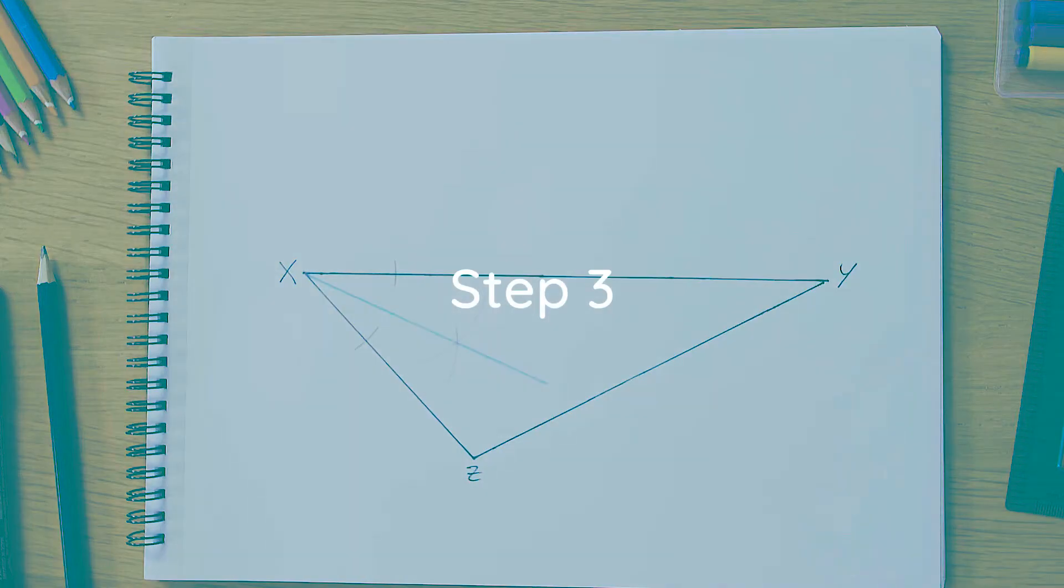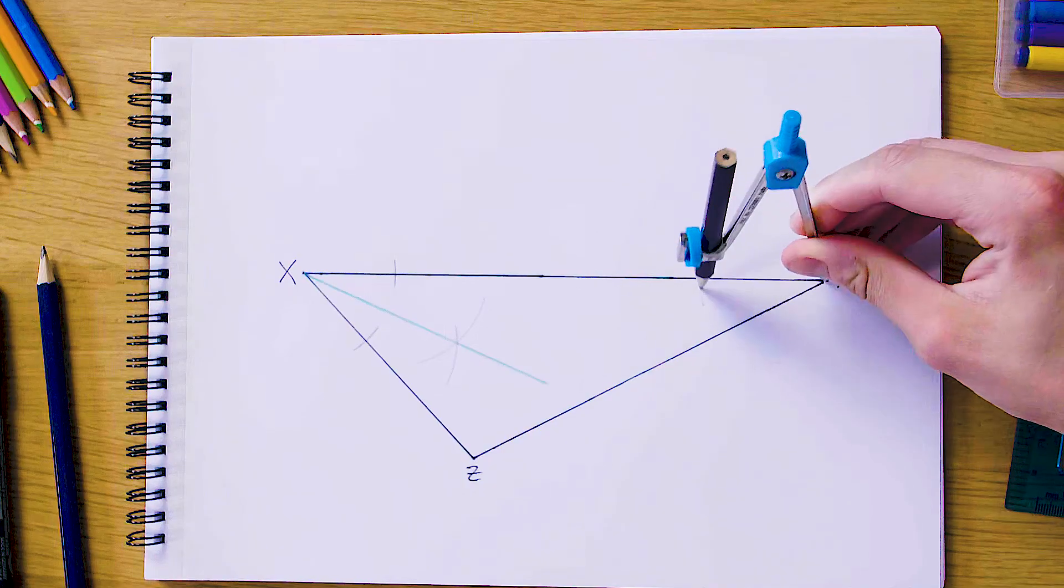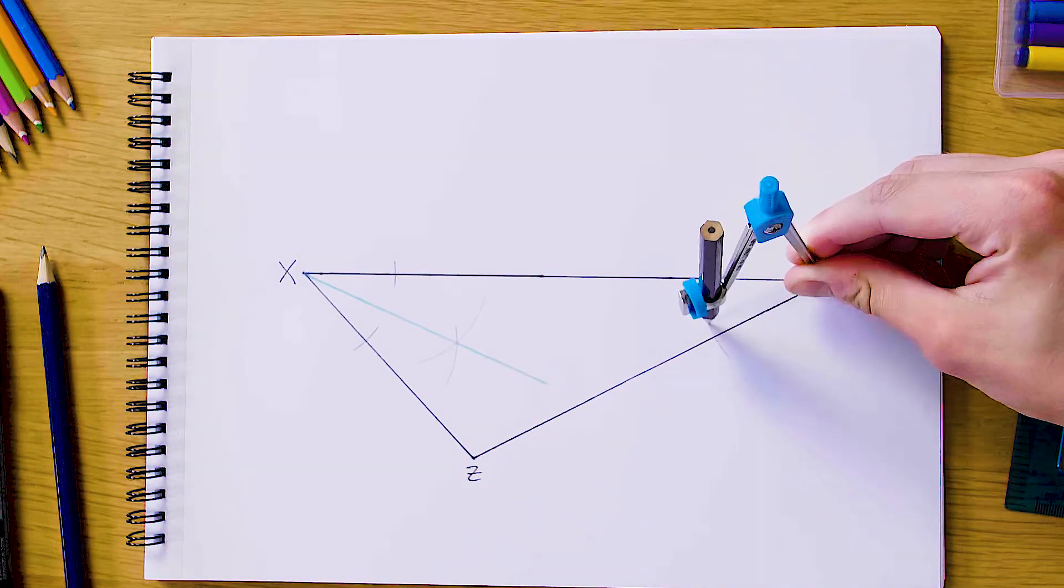So now we're just going to repeat this process but this time at the angle which is at Y. At this angle we're going to swing two arcs of our compass which cuts both sides once again around the angle.